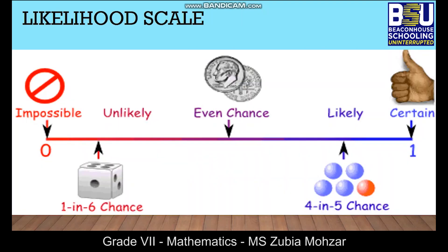The likelihood scale is just like our probability line. It ranges between 0 and 1, which means that the probability of an event occurring is always between 0 and 1. You can see that different terms are written on the probability number line.